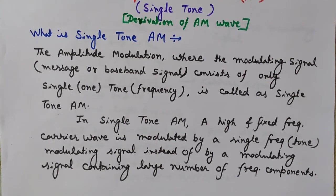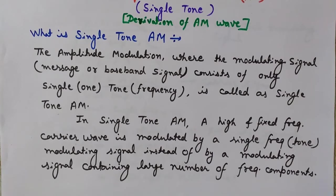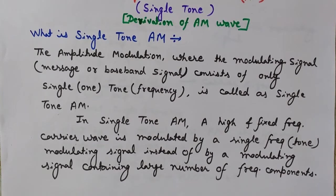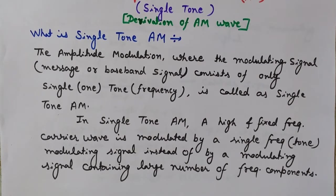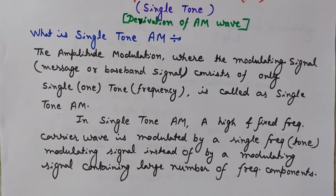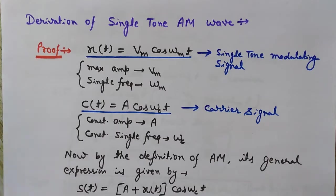In single-tone AM, a high fixed-frequency carrier wave is modulated by a single-frequency modulating signal. In the general case, the modulating signal contains multiple or lots of frequencies, but in single-tone AM we only have a single frequency in the modulating signal, that is, in the message signal.